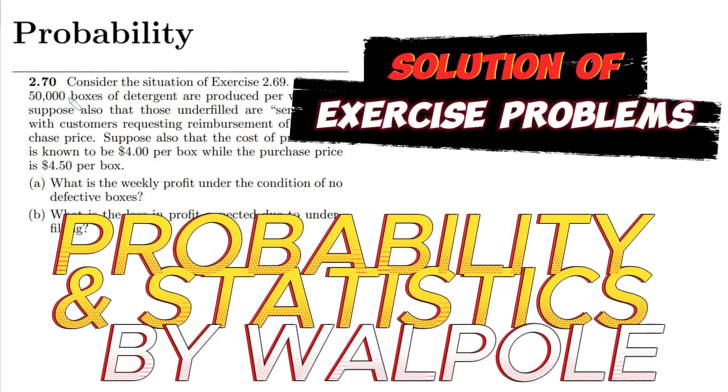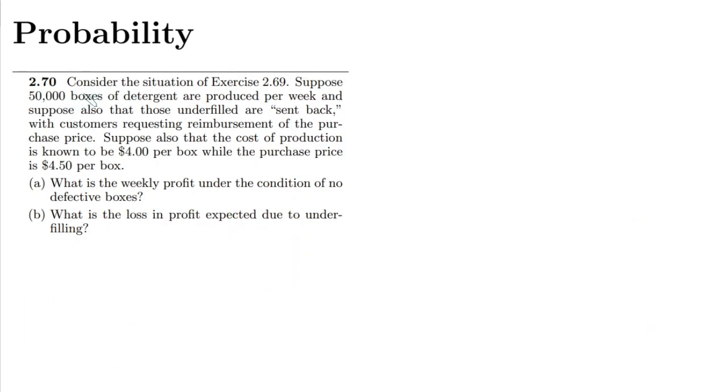Welcome back guys, this is question 2.70. The statement says consider the situation of exercise 2.69. Suppose 50,000 boxes of detergent are produced per week. The given data is: